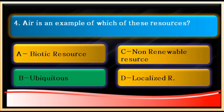Plants renew the air — they absorb carbon dioxide and give us oxygen, so air is a renewable resource. Option D says air is a localized resource, which is also wrong because air is a universal or ubiquitous resource found everywhere. So option B is correct. Ubiquitous resources are those found everywhere, like sunlight, soil, and air. The answer to question four is B: ubiquitous resource.